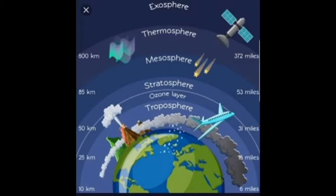Notice that it is 8 kilometers near the poles and 18 kilometers over the equator. Why is there this difference? Because the equator is warmer — air gets heated up on the planet's surface, causing convection currents to flow from the equator to the poles. This means that the warmer the weather, the thicker the troposphere.